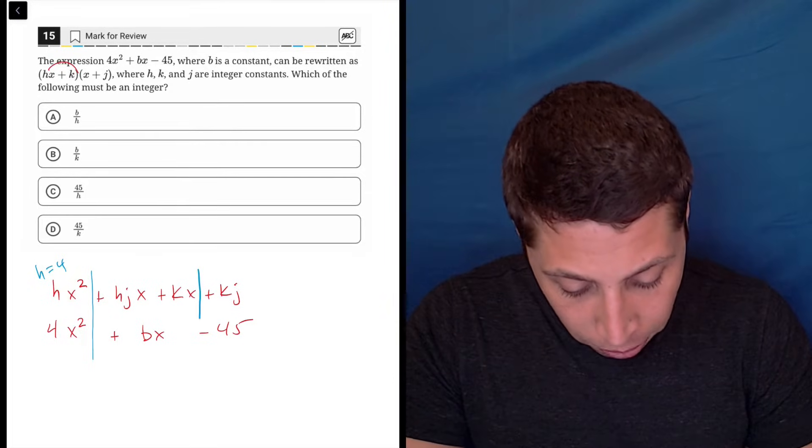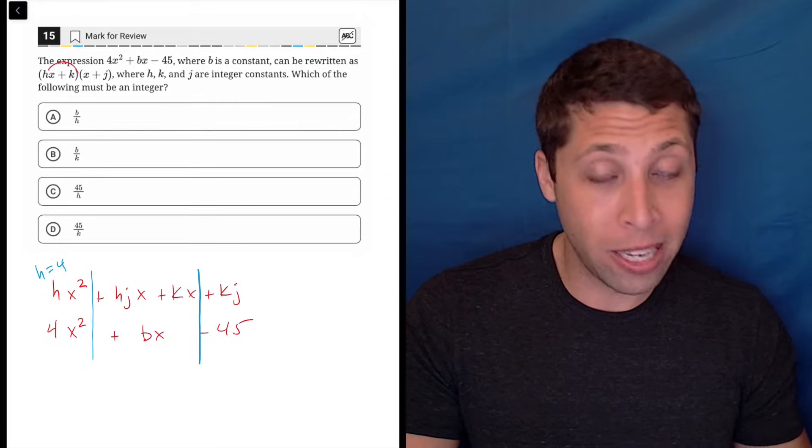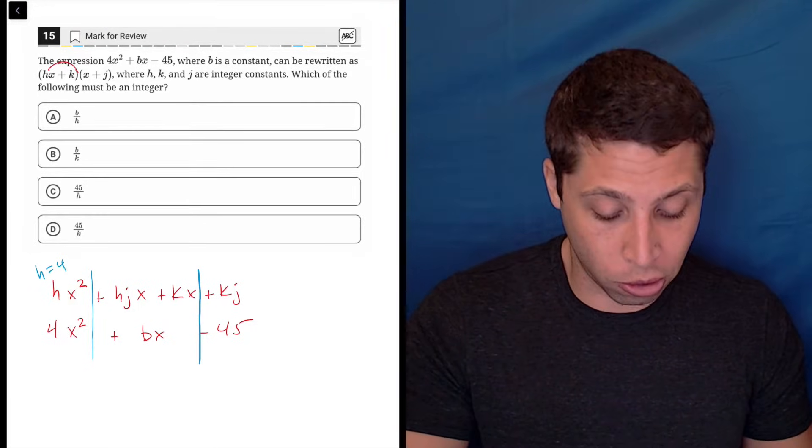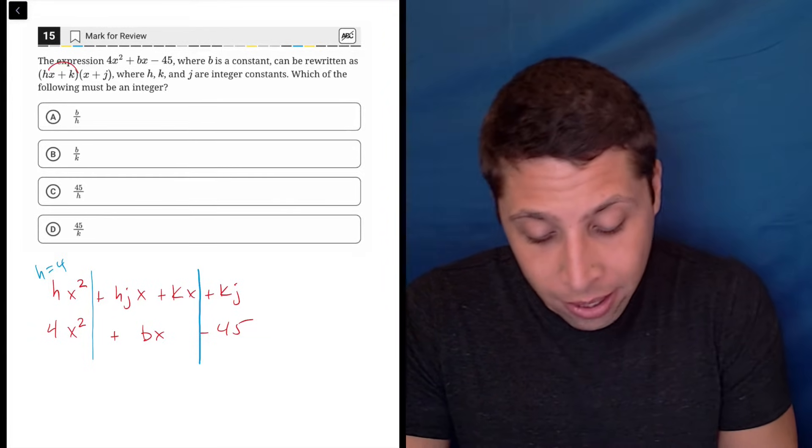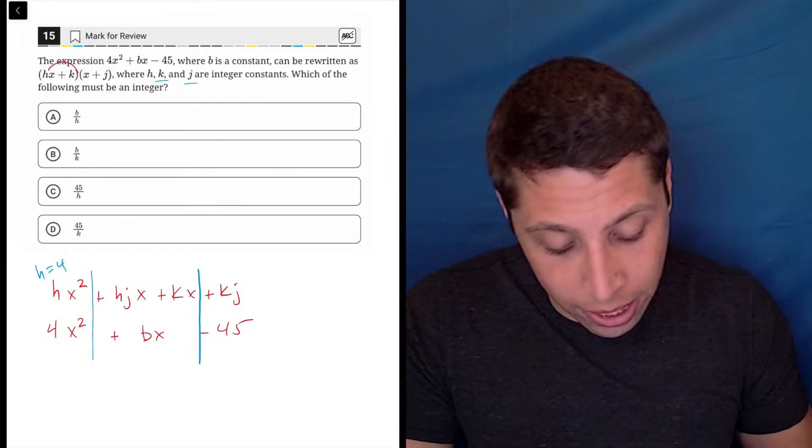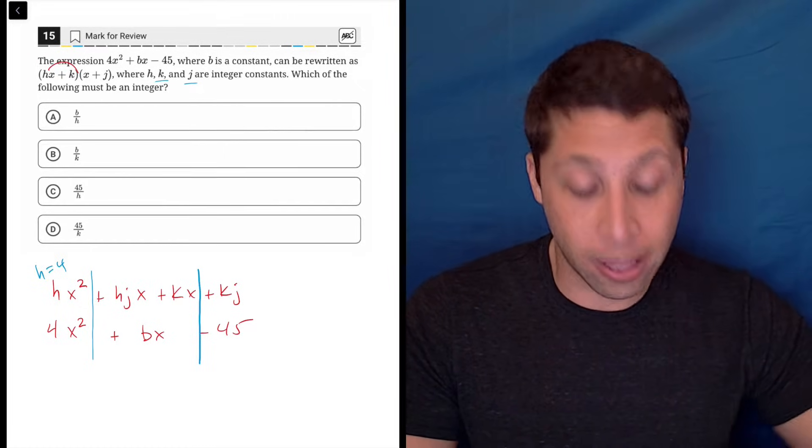Similarly on the other end, we've got that k times j has to be negative 45. Now, I don't know what those two parts are. Maybe I can figure it out, I don't really know. But I do know that since k and j are integers, there's a limited combination of things that this could be.